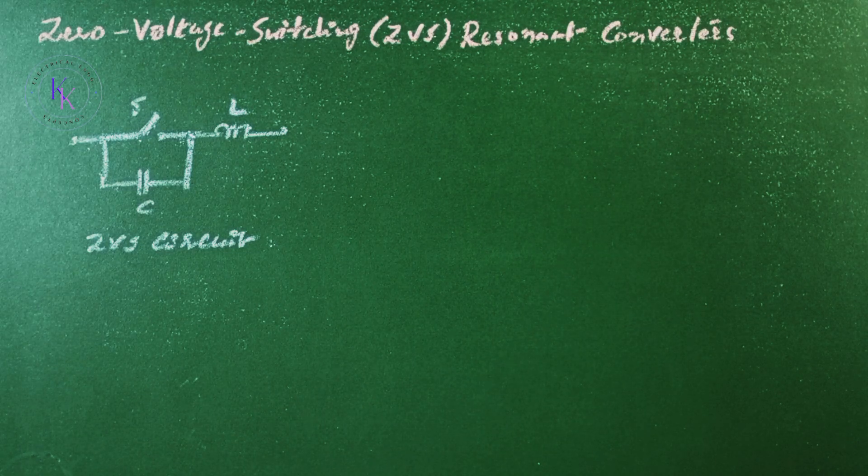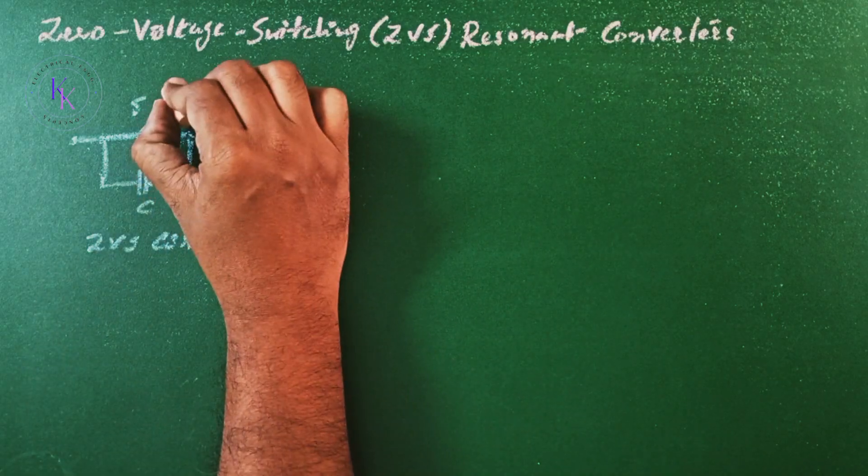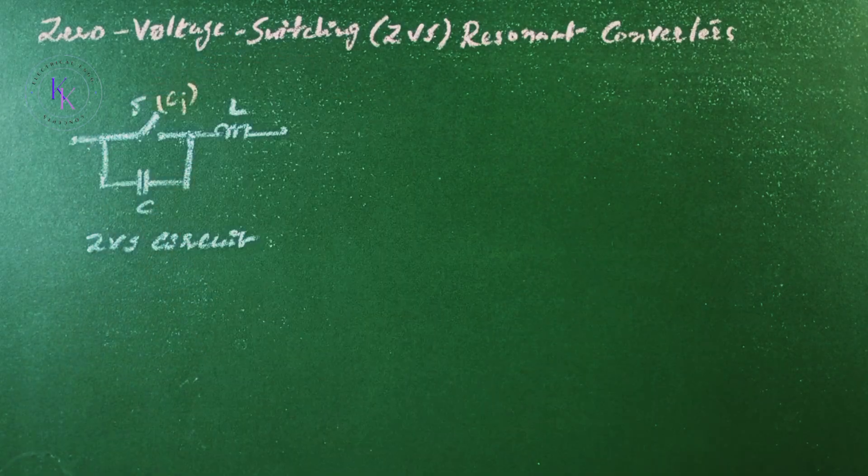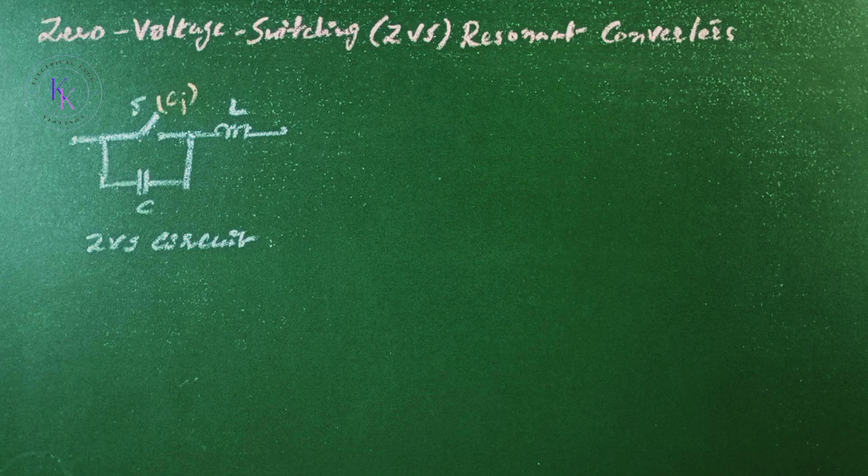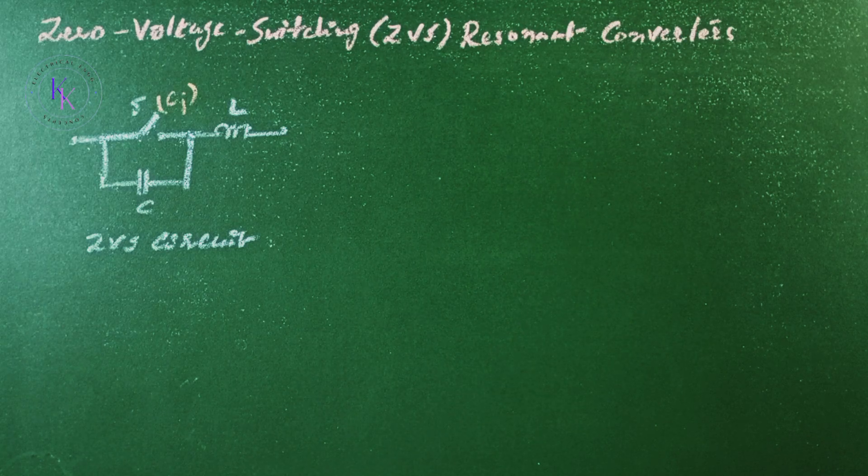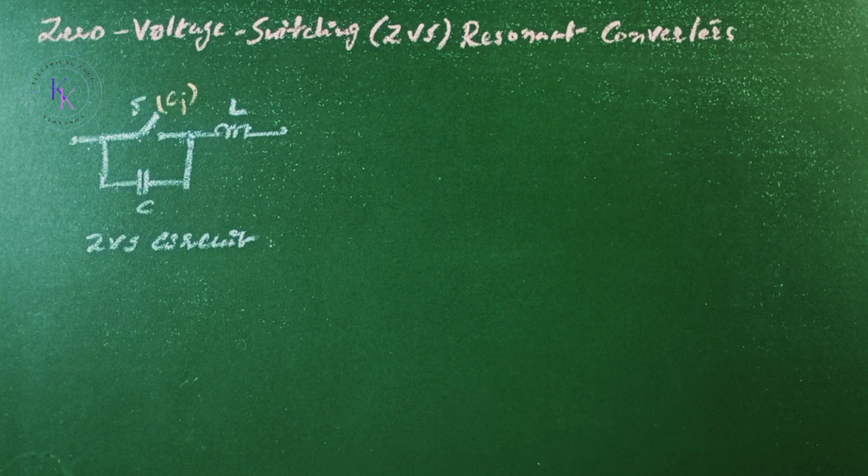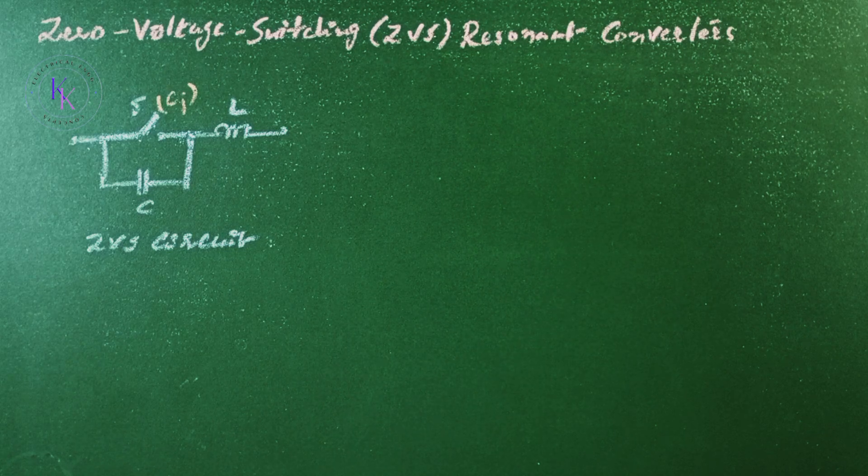The internal switch capacitance, that is Cj, added with the capacitance C affects the resonant frequency only, thereby contributing no power dissipation in the switch.